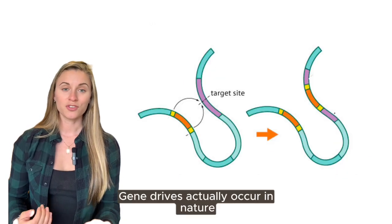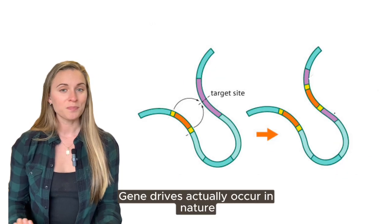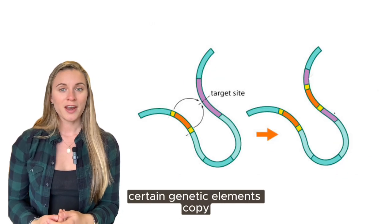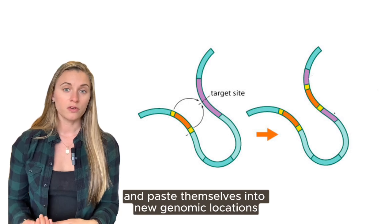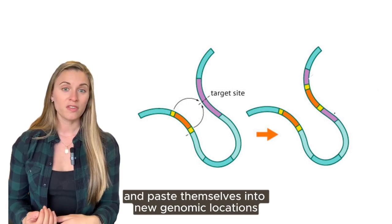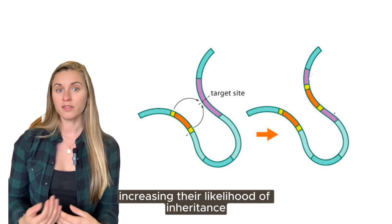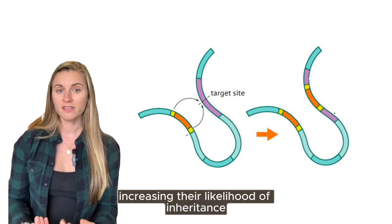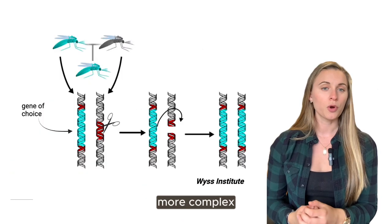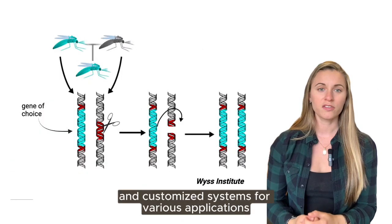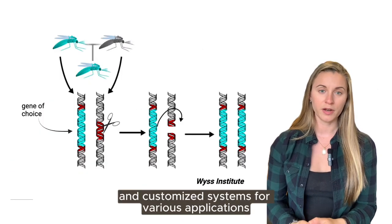Gene drives actually occur in nature. Certain genetic elements copy and paste themselves into new genomic locations, increasing their likelihood of inheritance. But scientists have harnessed this behavior to build more complex and customized systems for various applications.